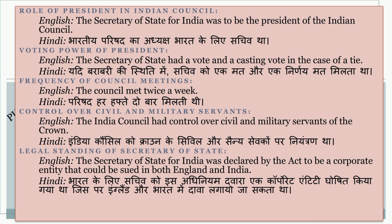The India Council had control over civil and military servants of the crown. India Council ko crown ke civil aur sainya sewako par niyantran tha. The Secretary of State for India was declared by the act to be a corporate entity that could be sued in both England and India.